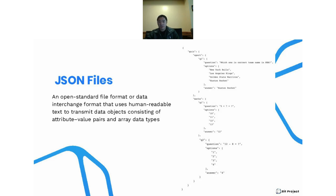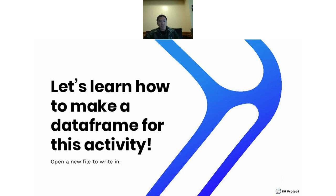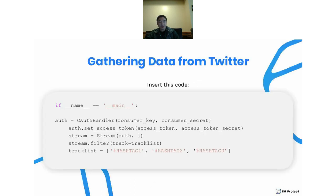Do you have any questions about JSON? I want to make sure I cover all bases. Okay, I'm not getting anything in the chat, so I'm going to move on. Now we're going to learn how to make a data frame for this activity. Please make sure you open a new file to write in before we move on. We're going to start off with gathering data from Twitter, so you should insert this code — I'll give you guys about 10 to 15 seconds to do that.